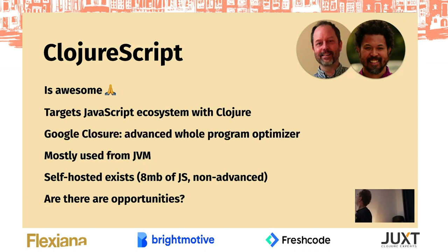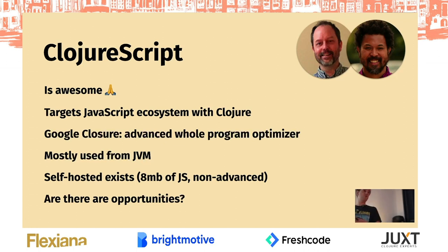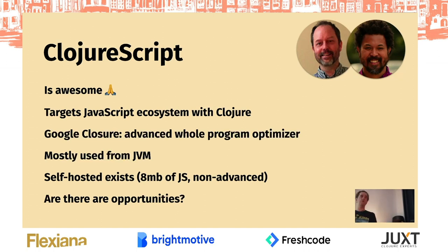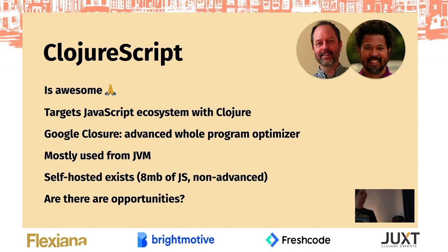ClojureScript is awesome. We already heard something about Mike Fikes and David Nolan — these two are the main people behind ClojureScript. I'm happy that it exists and I'm not here to criticize ClojureScript. ClojureScript should stay the way that it is, but I'm here to propose some new tools that we can create with ClojureScript. ClojureScript targets JavaScript using Closure, and it comes with Google Closure as an advanced whole-program optimizer. What you do with ClojureScript typically is make front-end applications, and not so much libraries you put on NPM for other JavaScript users.